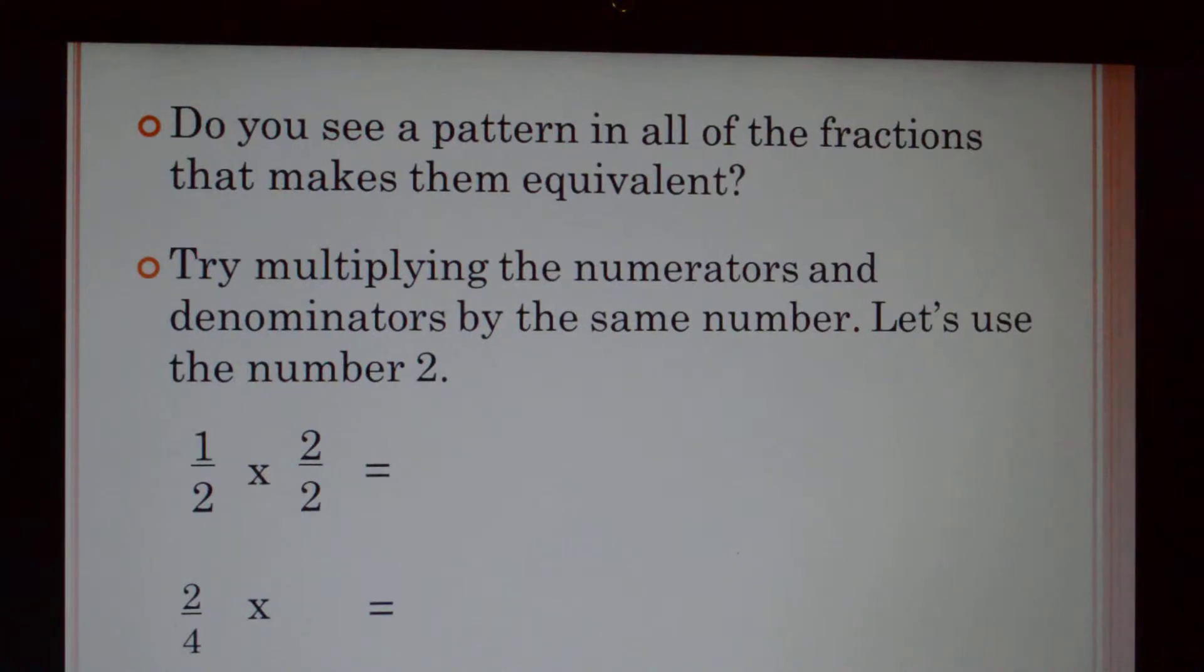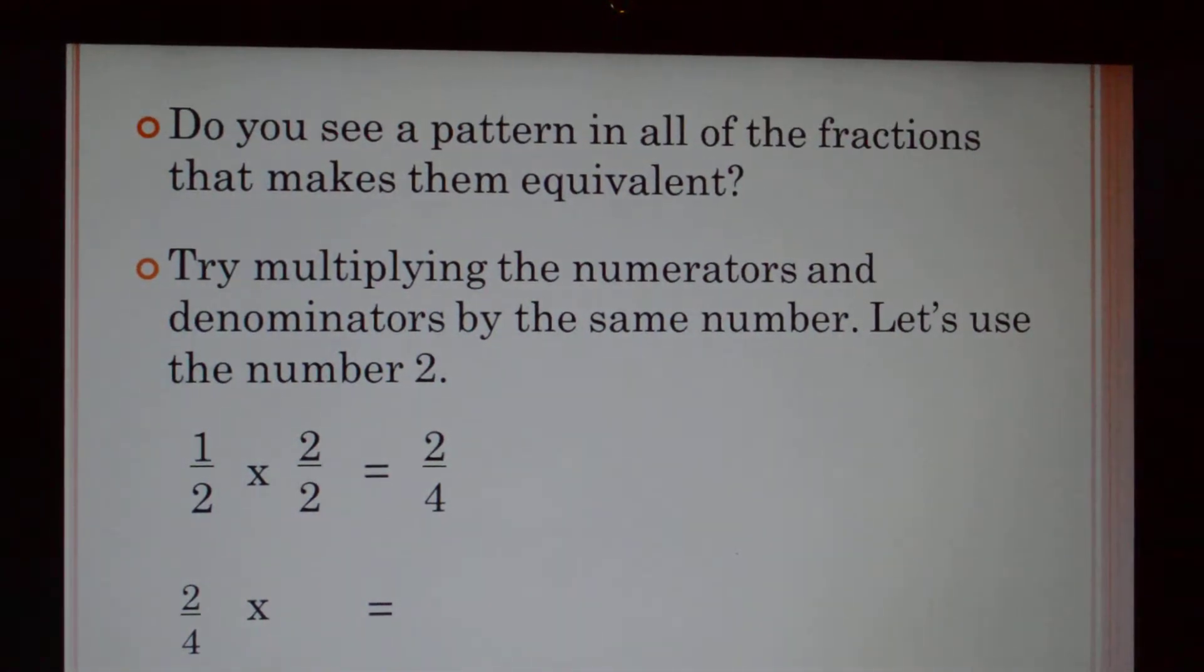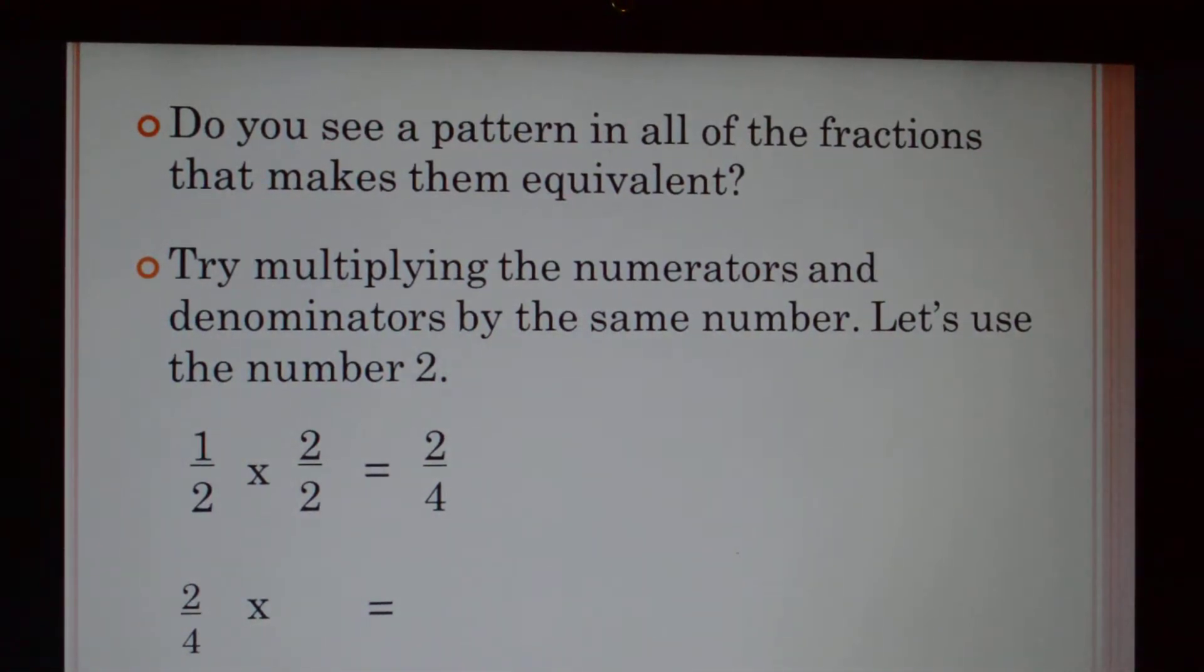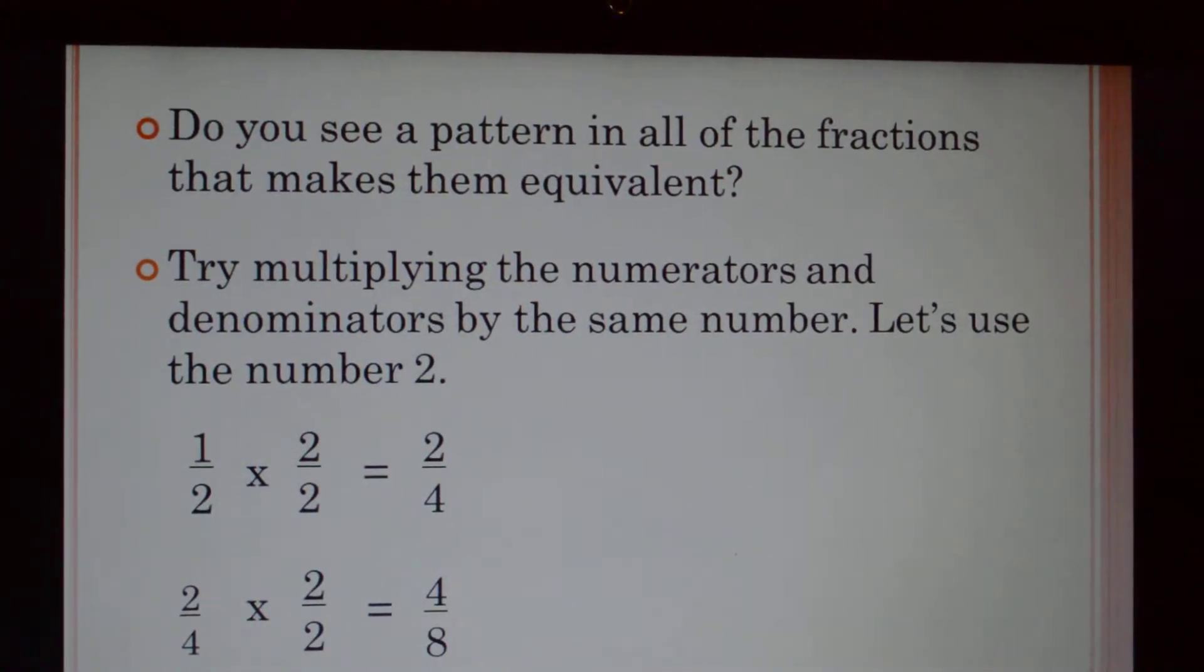One half times two over two is one times two is two, and two times two is four, or two fourths - equivalent fractions. Let's multiply two fourths by two over two and we'll get four eighths. Two times two is four and four times two is eight.